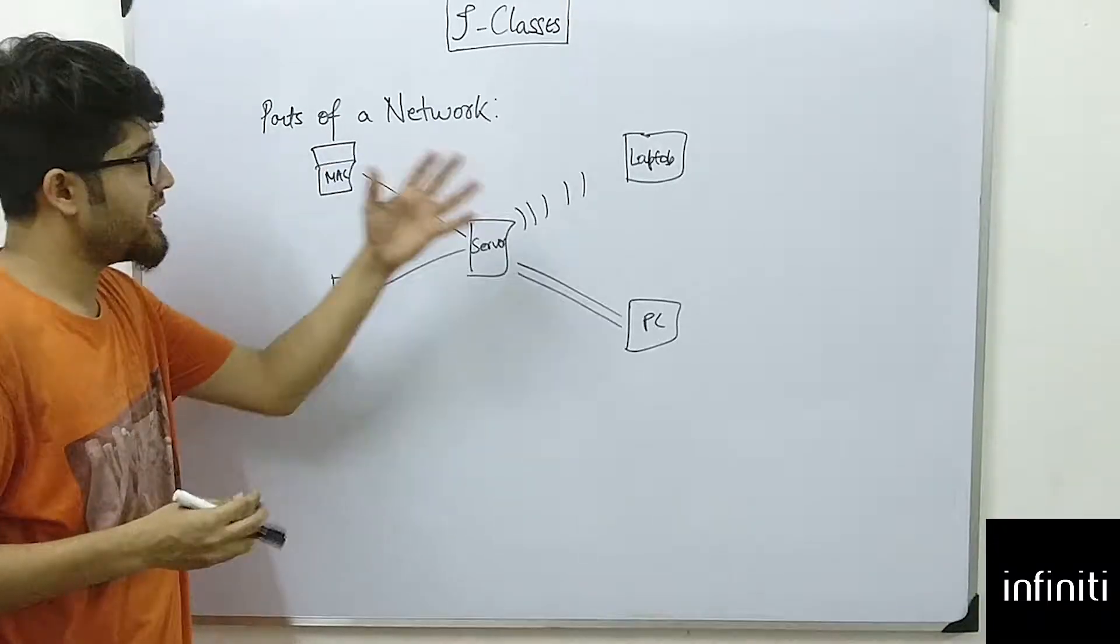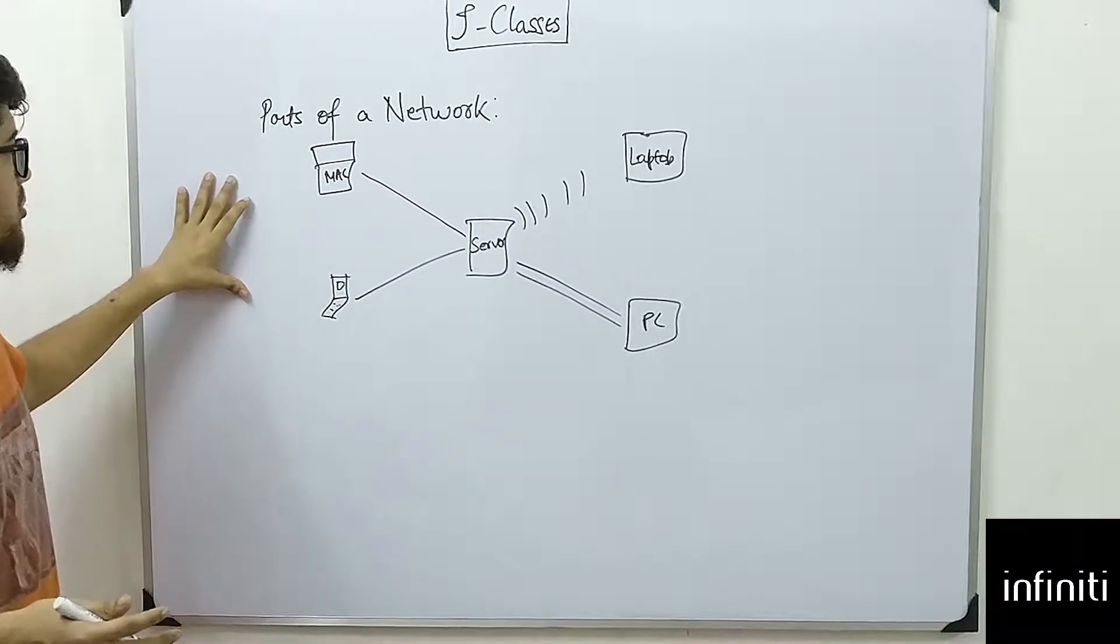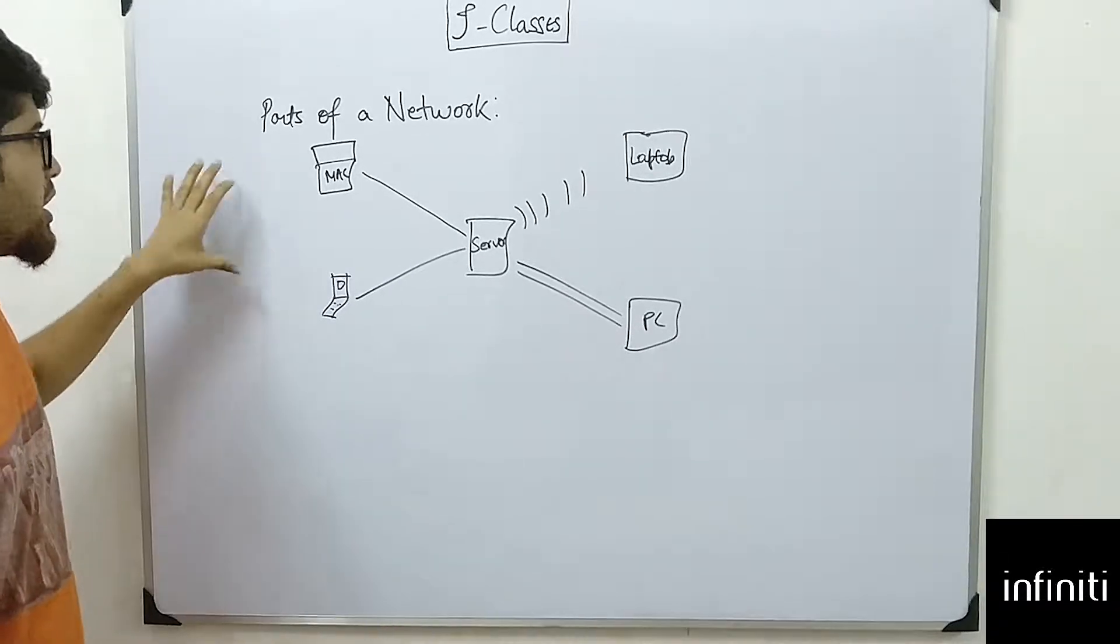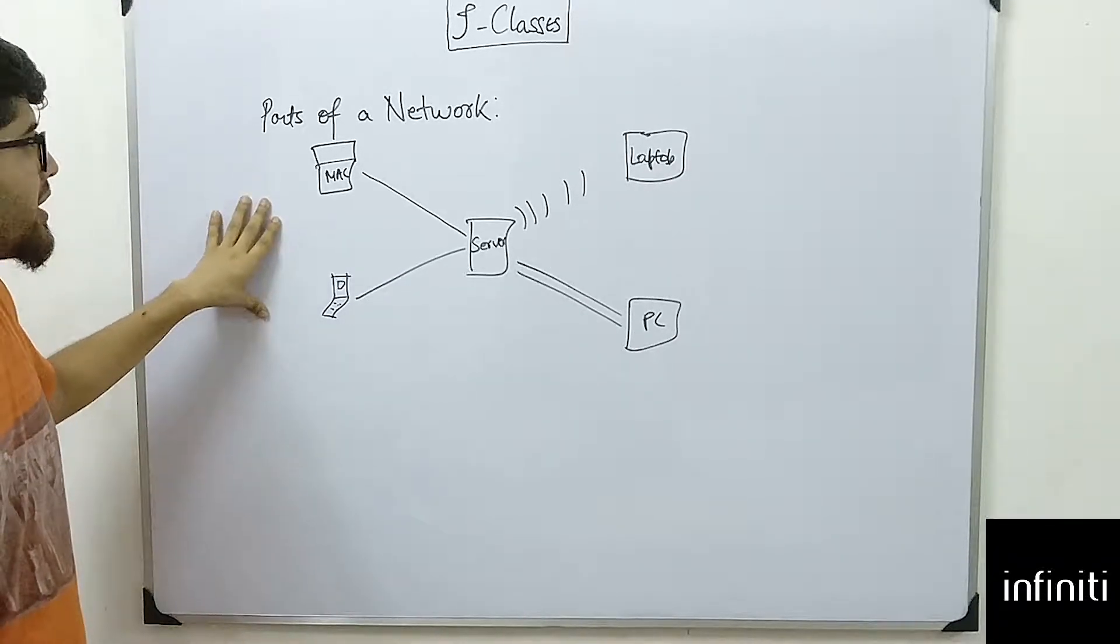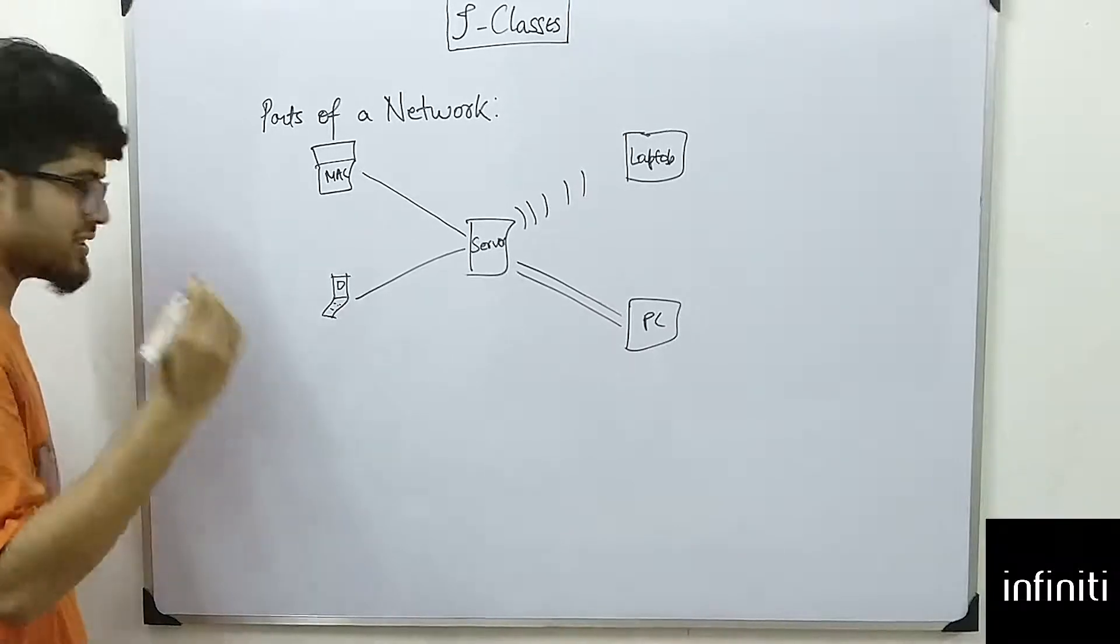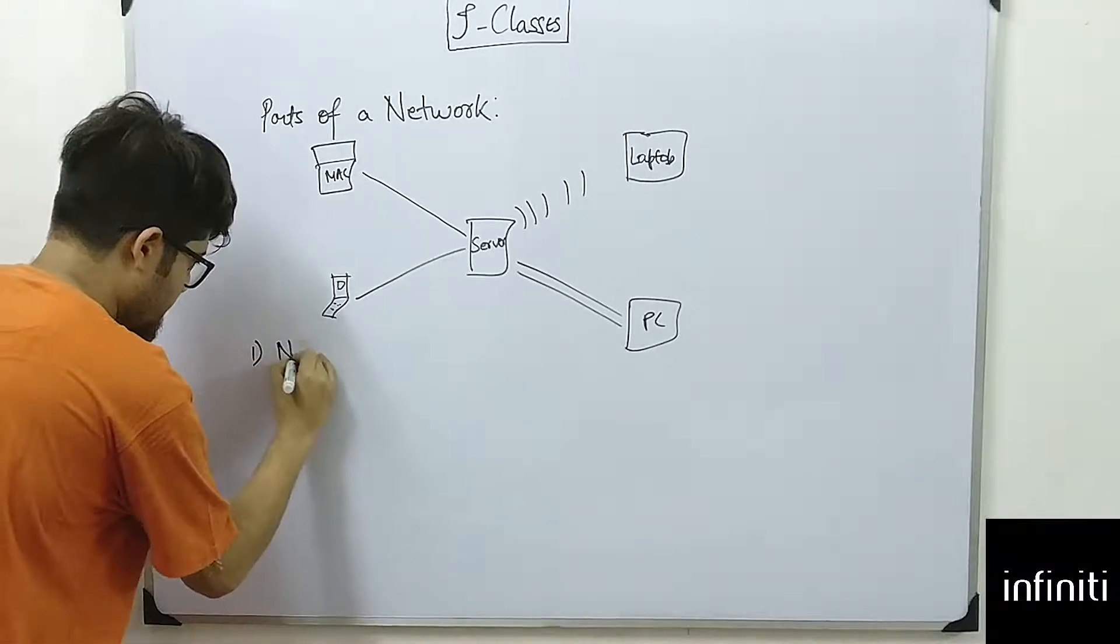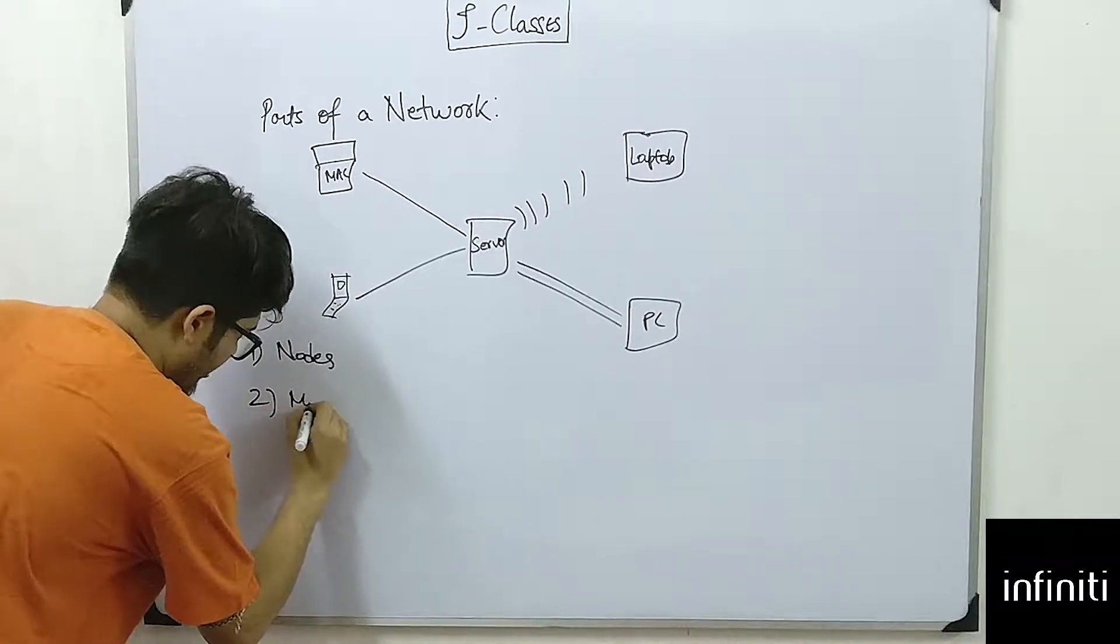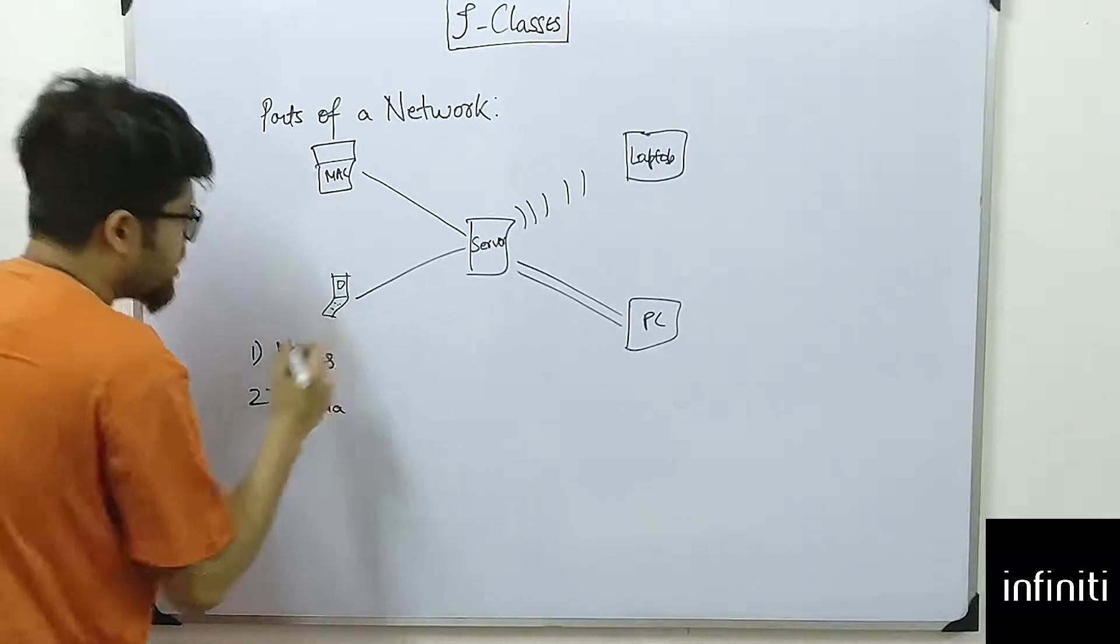We have studied a lot about networks, so we will now summarize it by dividing into parts of network. In a network we can see only two parts: nodes and media.